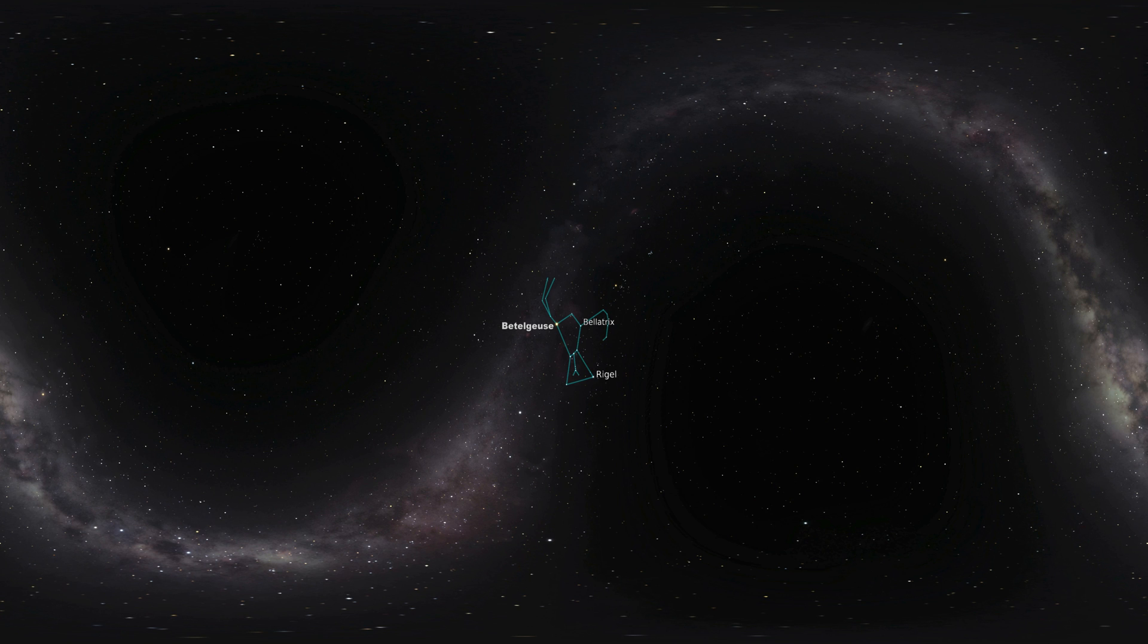When Betelgeuse recently dipped quite a bit in brightness, it looked as bright as Bellatrix, its faintest on record. With a little practice, you should be able to detect these changes, even from all the way here on Earth.